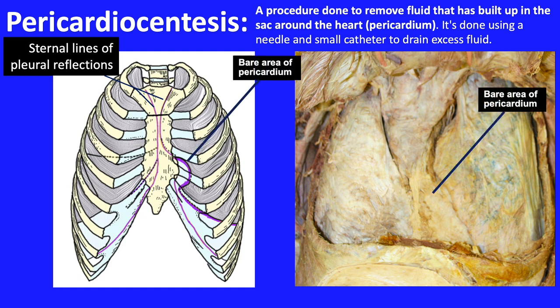The bare area of the pericardium is the area that can be approached with a needle and catheter to avoid damaging the pleura and inducing a pneumothorax. Consequently, the needle is inserted below the fifth intercostal space into the bare area of the pericardium. An approach going below the costal margin could also be used, but then the diaphragm would be pierced as well. Nowadays, echo-guided procedures are used to guide the needle and avoid causing a pneumothorax.